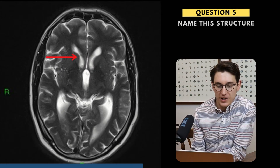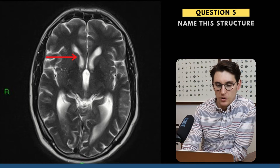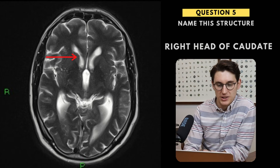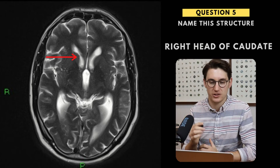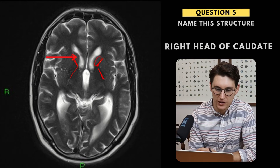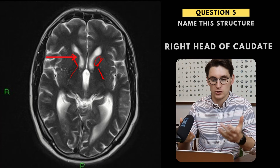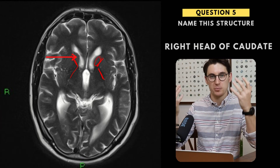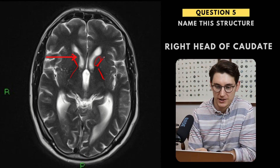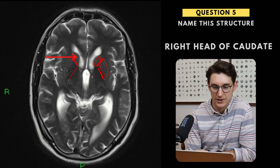Question five — we have an axial slice through the brain here. What we have here is the right-sided head of the caudate. We have our lateral ventricles, and the caudate runs laterally to those lateral ventricles. It's bound laterally by the anterior limb of the internal capsule, and this is the posterior limb. As we go more superiorly and posteriorly, the head of the caudate becomes the body, and eventually the tail of the caudate. Other structures visible that are also part of the basal ganglia include the lentiform nucleus, and we can also see deep gray matter such as our thalami.